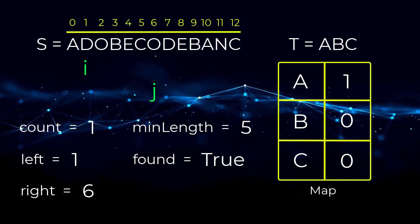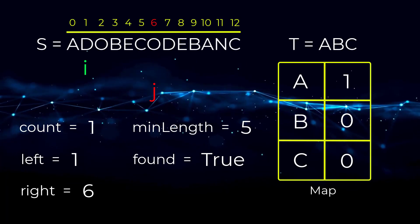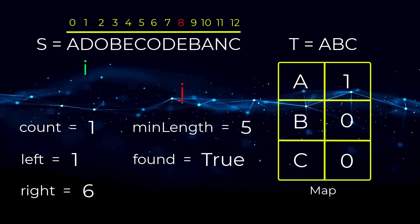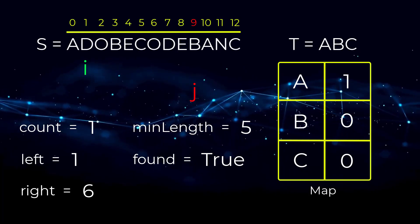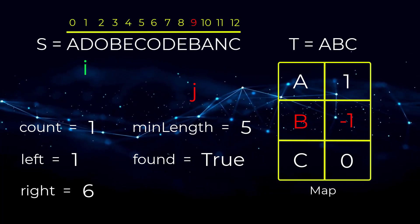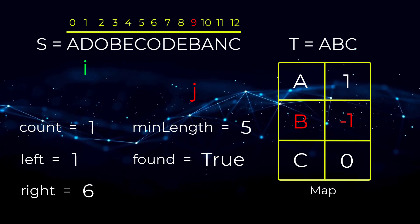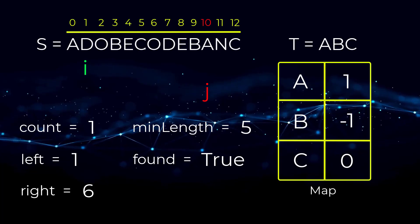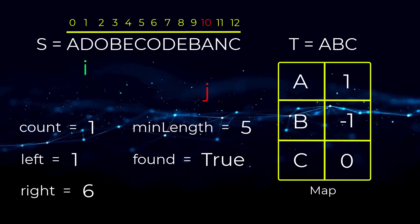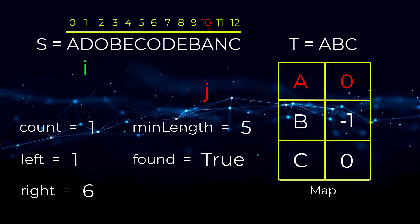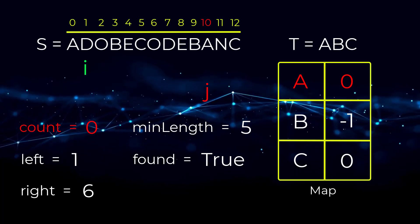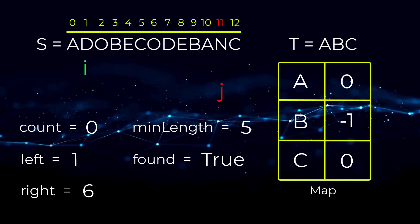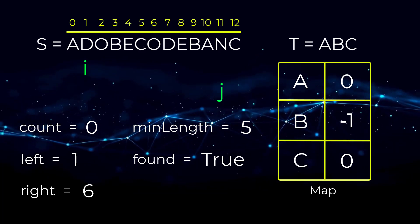J is looking at O — not in the map, move forward. D — not in map. E — not in map. J reaches B, which is in the map, so we decrement B to negative one. Since B is not zero, count is unchanged. J moves forward and count is greater than zero, so we continue searching for A. J reaches A, which is in the map, so we decrease it to zero and count drops to zero. We found another minimum window substring.